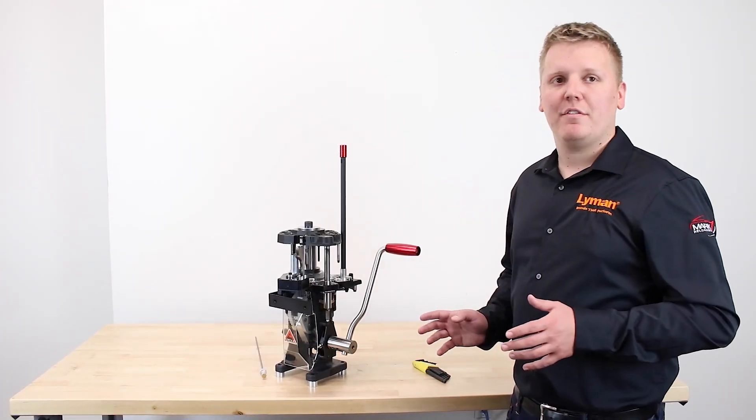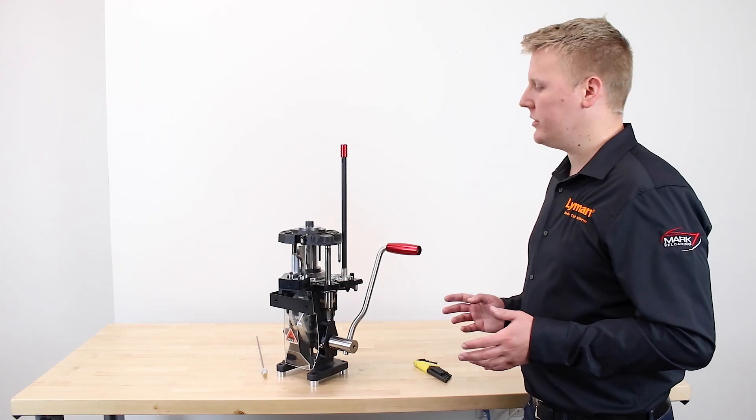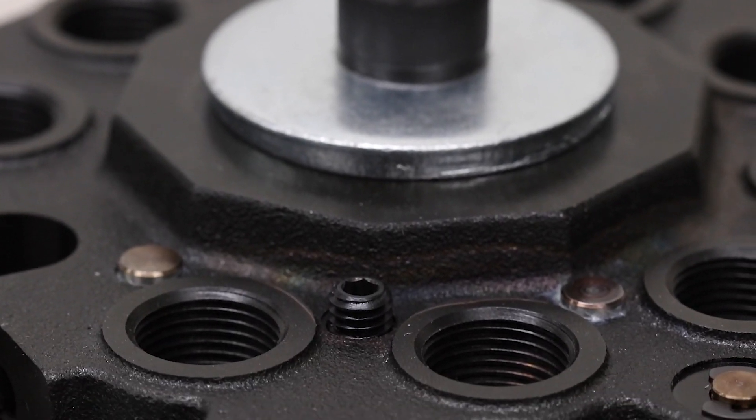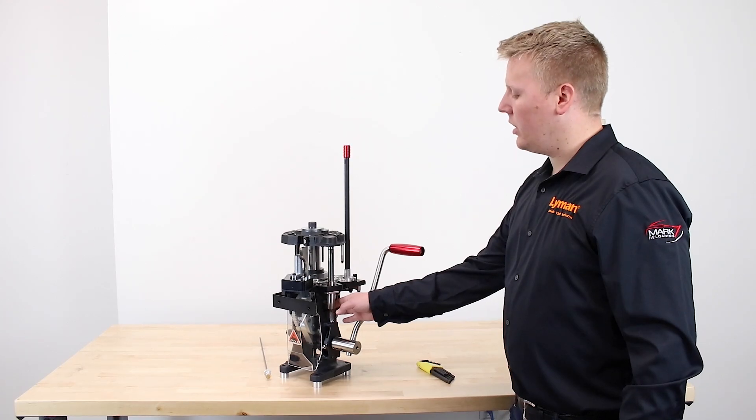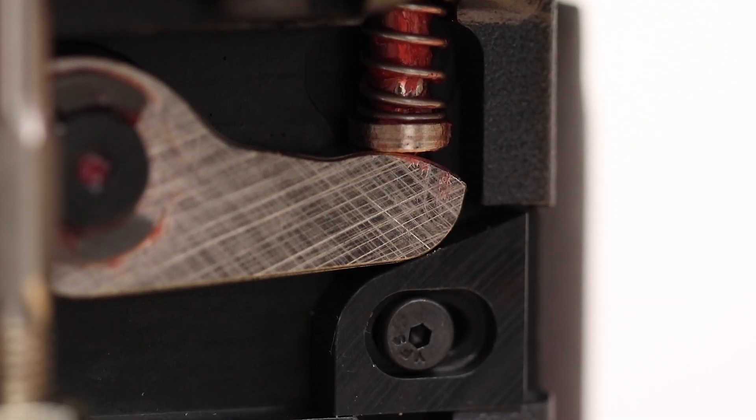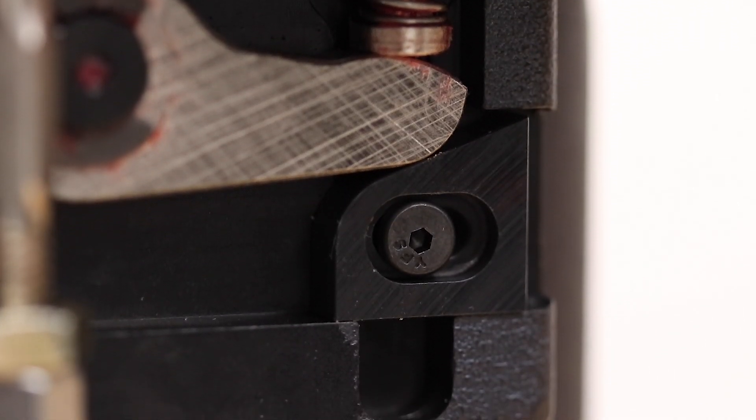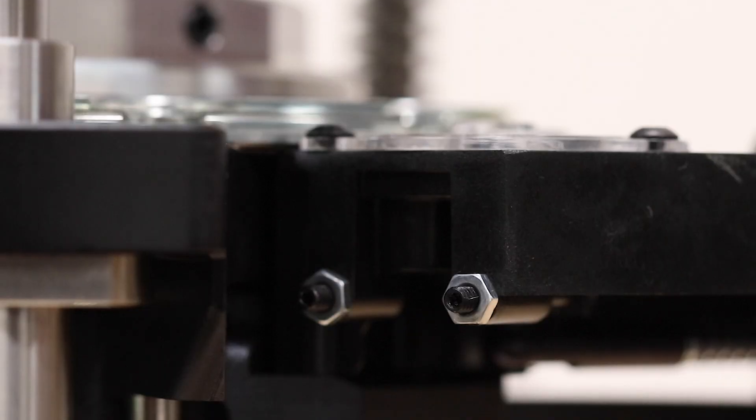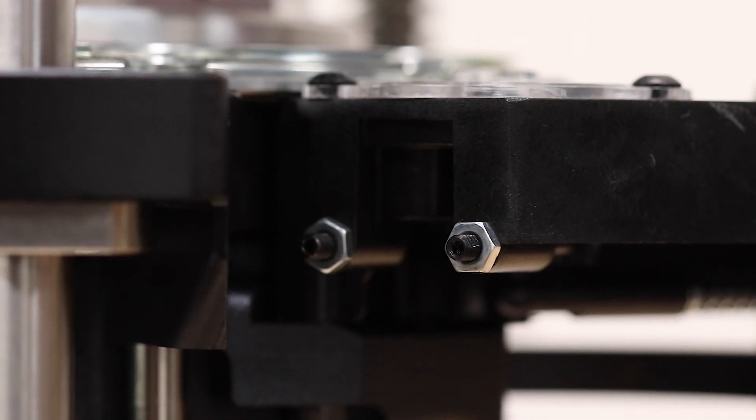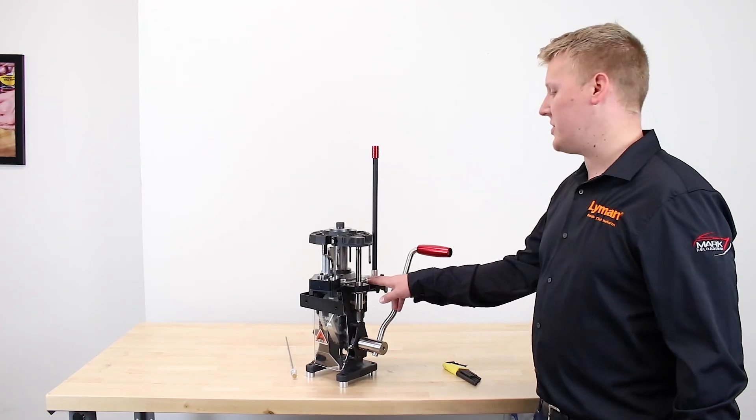Apex has five main adjustments on the priming system. At the top here we have our primer depth adjustment, here we have our primer free height, we have two disc adjustments, and finally we have the primer side plate.